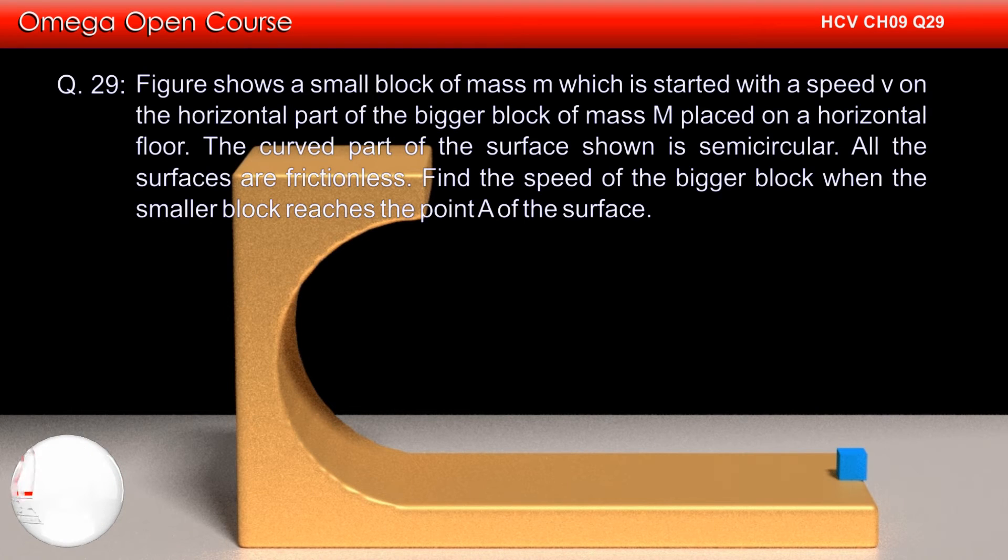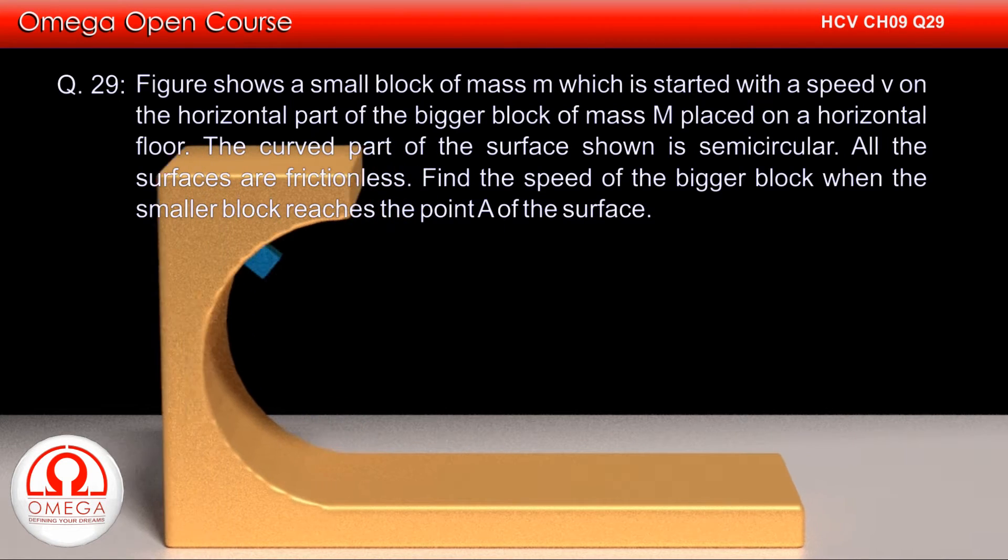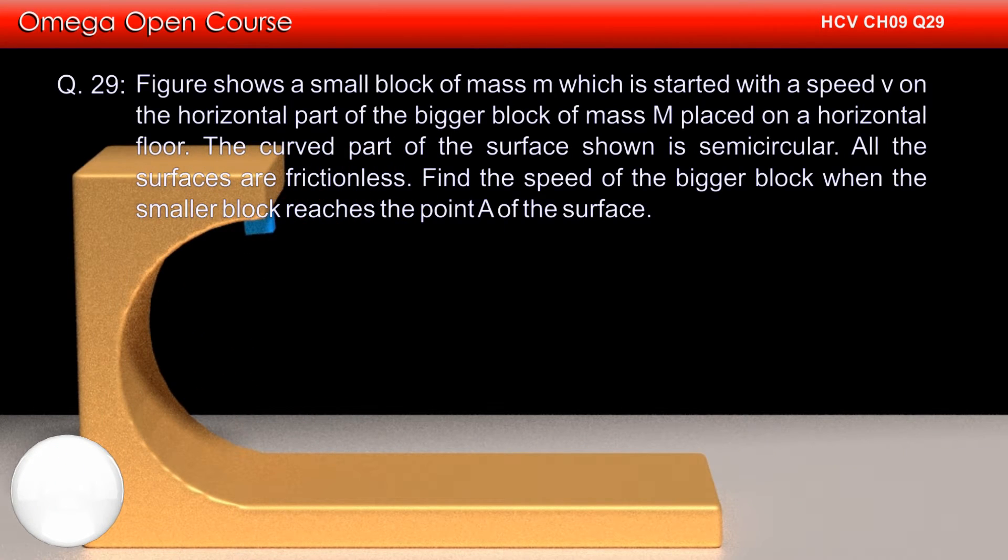The figure shows a small block of mass m which is started with a speed v on the horizontal part of the bigger block of mass M placed on a horizontal floor. The curved part of the surface shown is semicircular. All the surfaces are frictionless. Find the speed of the bigger block when the smaller block reaches point A of the surface.